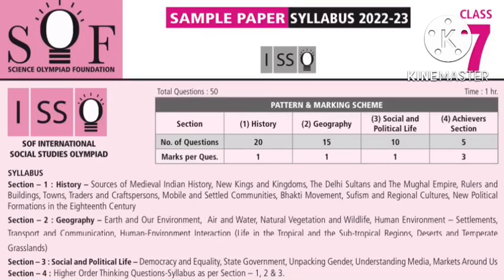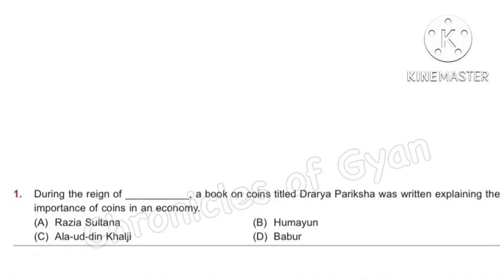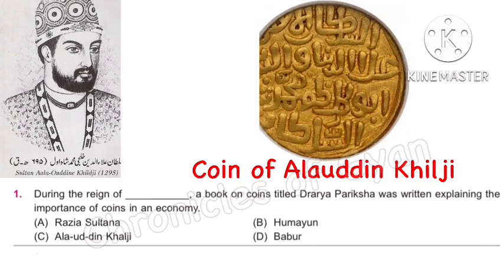Sample Paper Grade 7, 2022-23, Question 1. During the reign of Alauddin Khalji, a book on coins titled Drarya Pariksha was written, explaining the importance of coins in an economy. The correct answer is Option C: Alauddin Khalji.